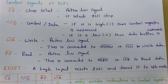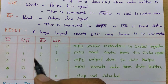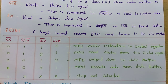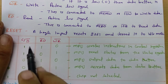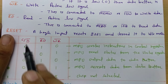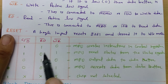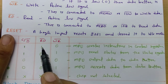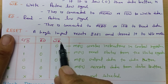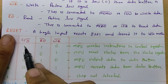Based on these control signals, the microprocessor identifies how data will get transmitted or received. If Chip Select is 0, 8251 gets selected; if 1, it will not. When C/D bar is 1, control register operation will happen. If Read bar is 1 and Write bar is 0, a write operation will happen — meaning the microprocessor writes an instruction into the control register.